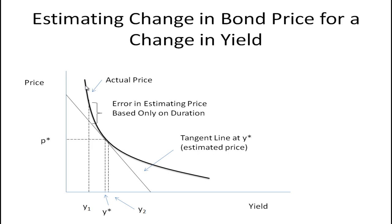It turns out the convexity is actually a rather nice property of this bond price-yield relationship, because it means that if the yield goes up by one percent, the percentage that the bond's price will fall will not be as much as the percentage the bond's price would rise if the yield fell by one percent. In a previous tutorial I have a graph for that and perhaps a better explanation.